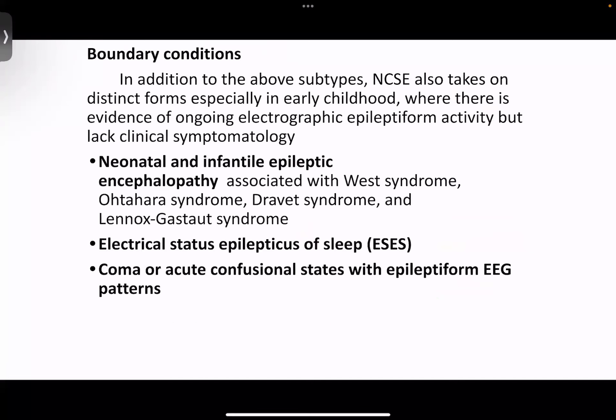There is something called boundary conditions, where in addition to the above subtypes, non-convulsive status epilepticus takes distinct forms in early childhood where there is evidence of ongoing electrographic epileptic activity but lacking clinical symptomatology. Examples include neonatal and infantile epileptic encephalopathy, electrical status epilepticus of sleep, and coma or acute confusional states with epileptiform EEG patterns.